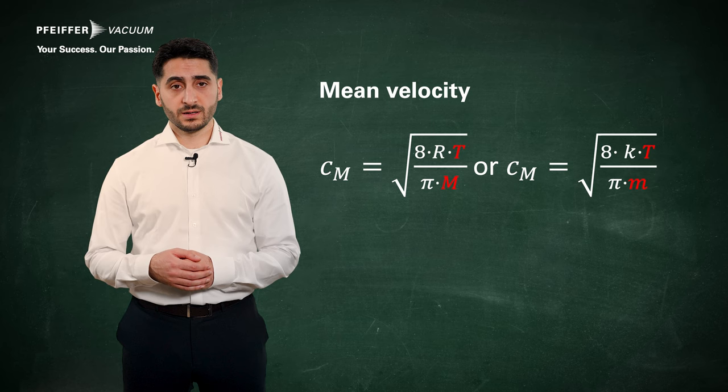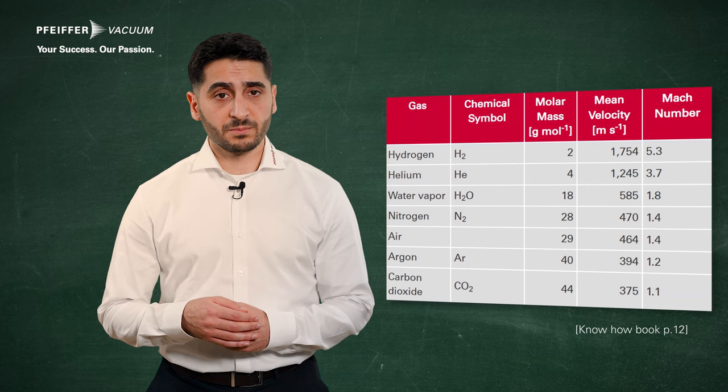The higher the temperature and the lower the mass of a particle, the greater its mean velocity.